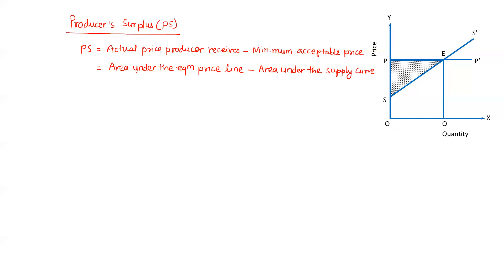In our diagram, the area under the equilibrium price line is PEQO, and the area under the supply curve is SEQO. Therefore, our producer's surplus is PES — that is the shaded area in the diagram.